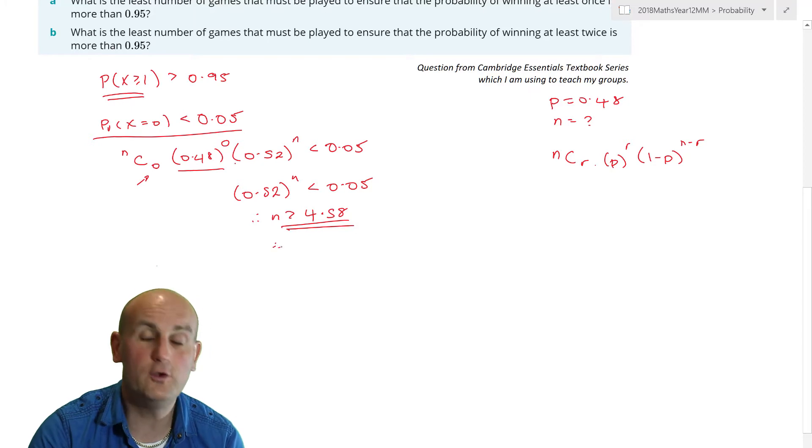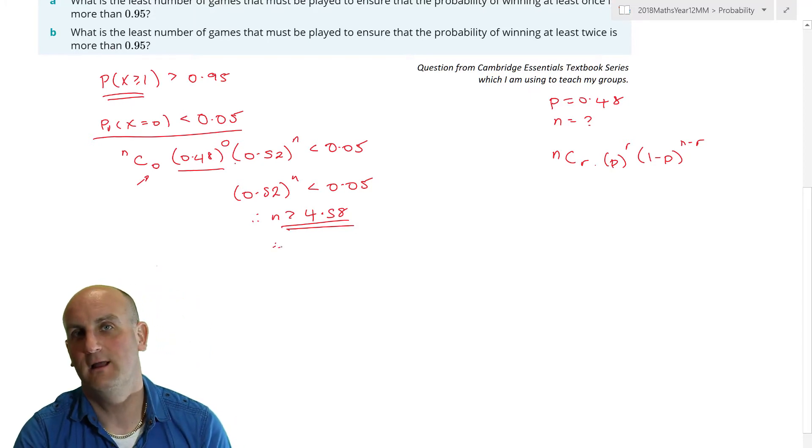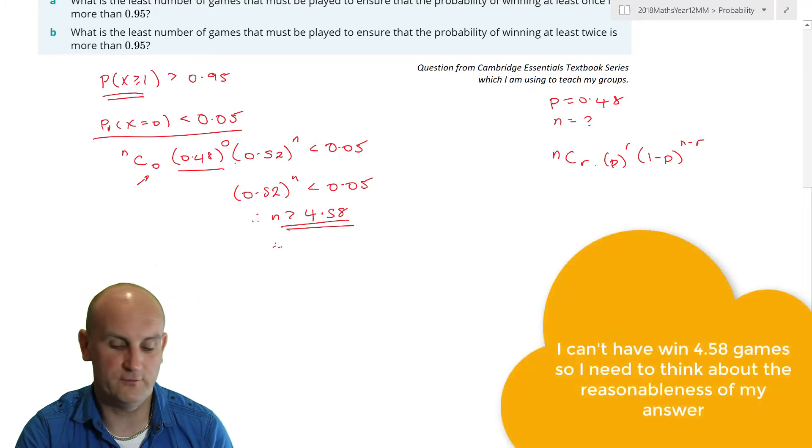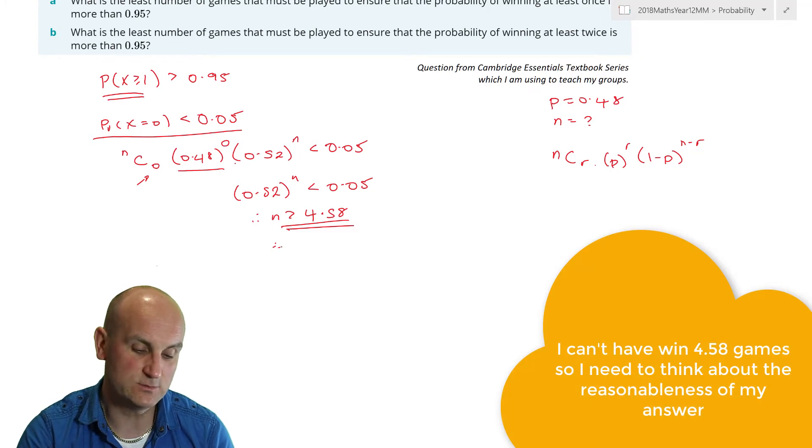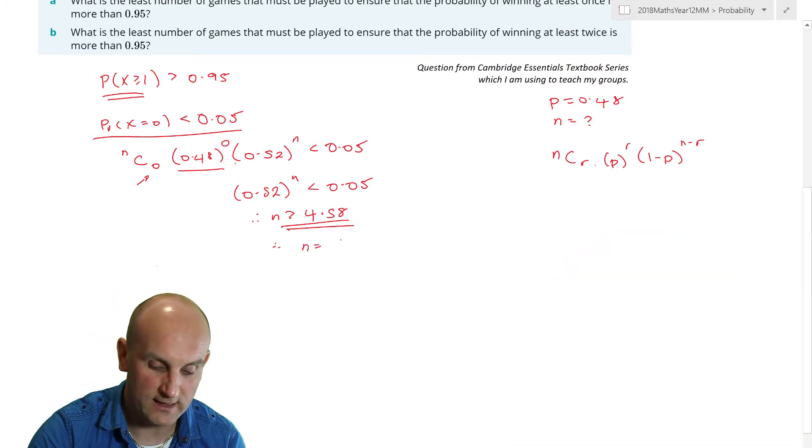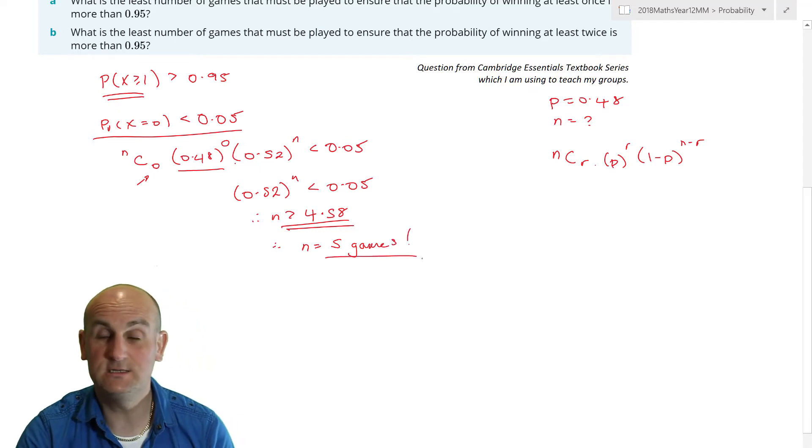And so to have a 0.95 or greater than 0.95 chance of winning at least one game, we would have to play five games. So that's an interpretation question. Now that was freaking awesome, nice and easy. When X is greater than equal to one, just find zero.